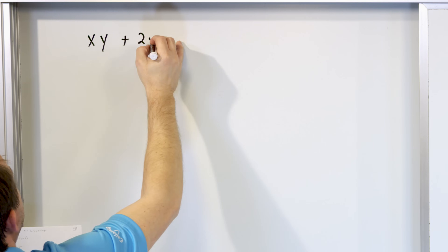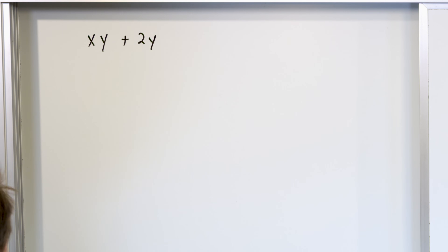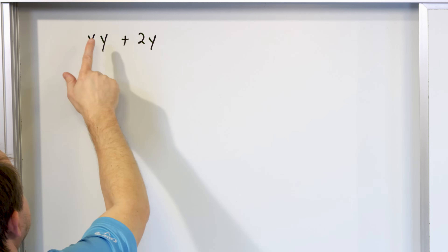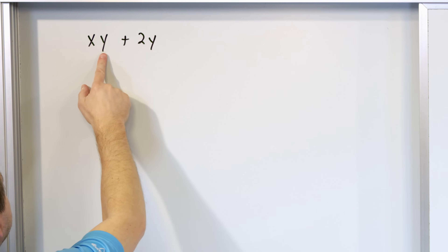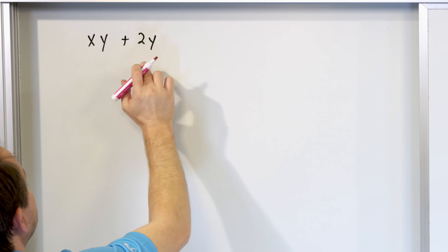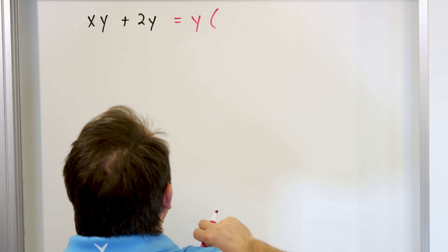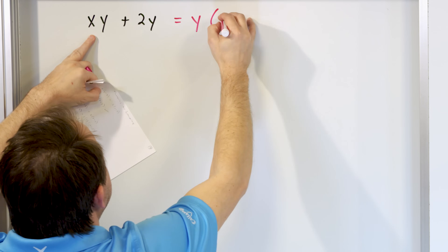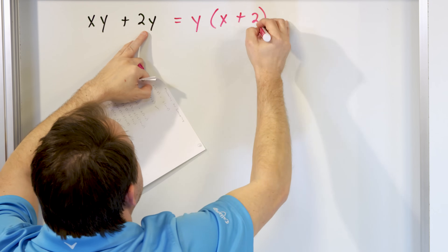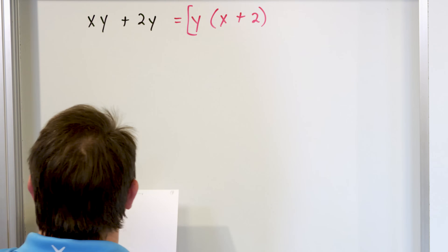To kick us off, I want to start with something very simple. What if I give you the expression x times y plus 2 times y, and I say factor that? The first thing you do is look for what's common. There's an x but no x in the other term, so that can't be common. There's a 2 but no 2 in the first term. But there's a y and a y — y is common. So I pull out the y and figure out what goes inside: y times x gives me the first term, and y times 2 gives me the second.